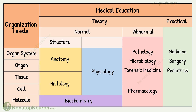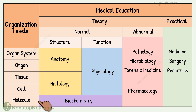For a normal healthy body, we study the structure and functions at all these levels. And this brings us to individual subjects. Broadly speaking, in anatomy, we study the structure at the organ system and organ levels.